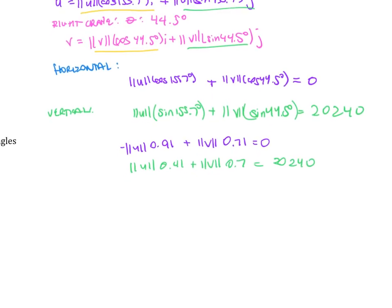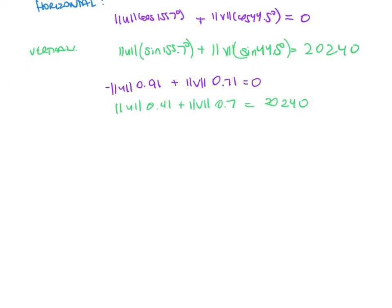That simplifies a little bit just plugging in the numbers. Then we need to solve the system. One way to do that is to solve for the magnitude of U, and because it's already positive and negative, that may be the nicer one to solve for. I'm going to multiply the top by 0.41, multiply the bottom by 0.91.